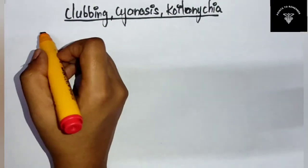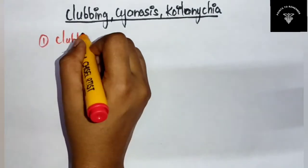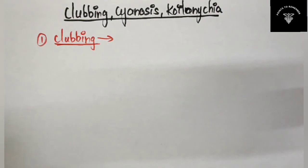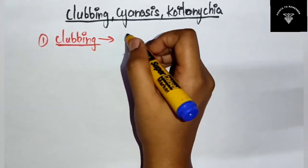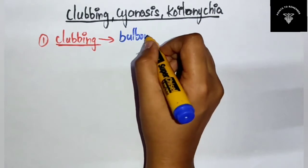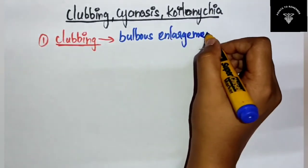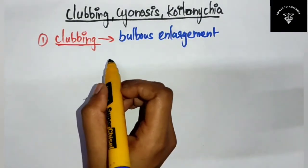First is clubbing. What is clubbing? Clubbing is nothing but the bulbous enlargement of the soft part of the terminal phalanges. You just have to remember your nails.